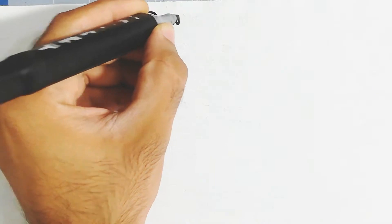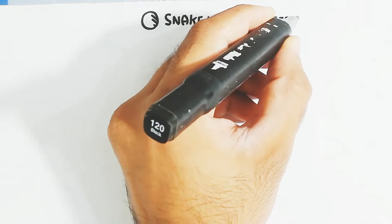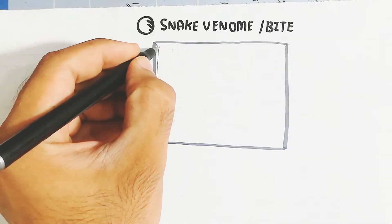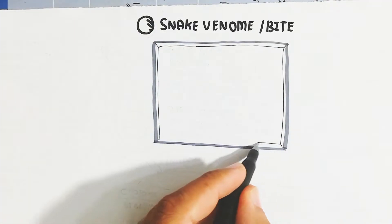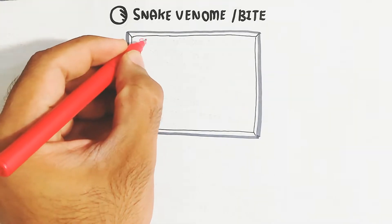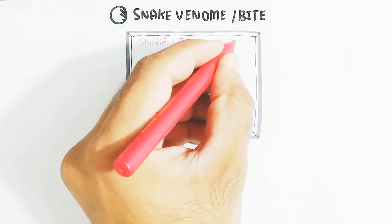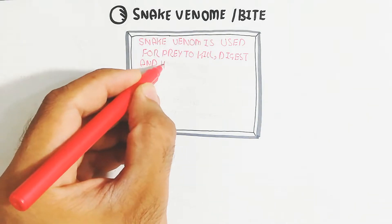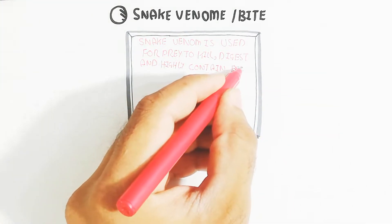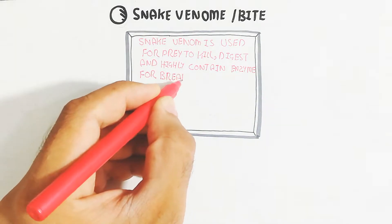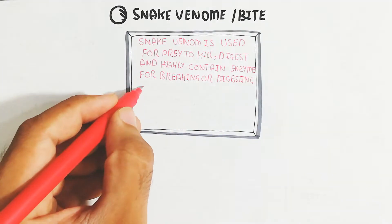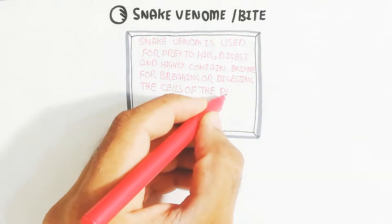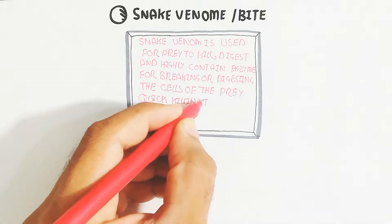In this video we will discuss snake venom and the physiology of snake bites. Snake venom is used to kill and digest prey, and is highly rich in enzymes for breaking down the cells of the prey — enabling quick killing by disrupting the prey's body physiology.